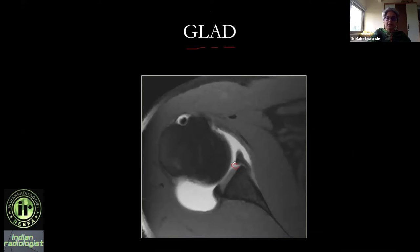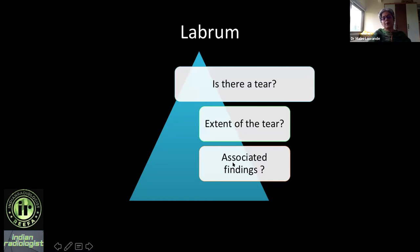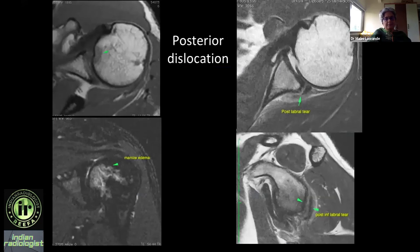If you don't use the term ALPSA, just say anterior inferior labral tear displaced medially — that's fine. Has a part of the adjoining cartilage also come off, creating a glenoid articular cartilage defect? If so, describe the anterior inferior labral tear with that cartilage defect size. Are there any associated findings? Yes, here there is also a posterior labral tear.